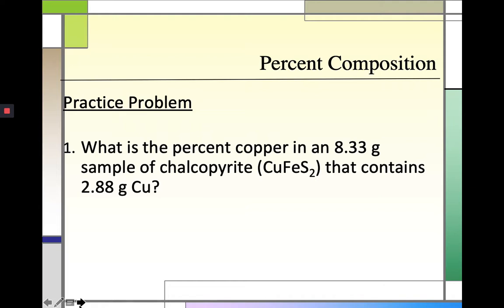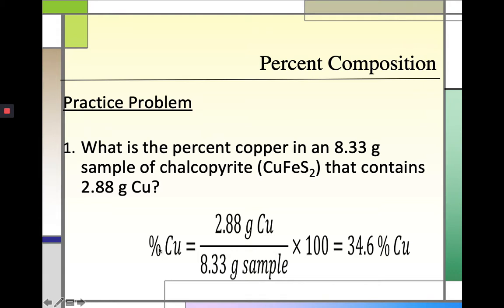For example, what is the percent copper in an 8.33-gram sample of chalcopyrite (CuFeS₂) that contains 2.88 grams of copper? We are given the amount of copper present and the total mass of the sample. To find the percent copper, we place 2.88 grams of copper as the numerator and 8.33 grams of sample as the denominator, then multiply by 100. We get 34.6% copper.